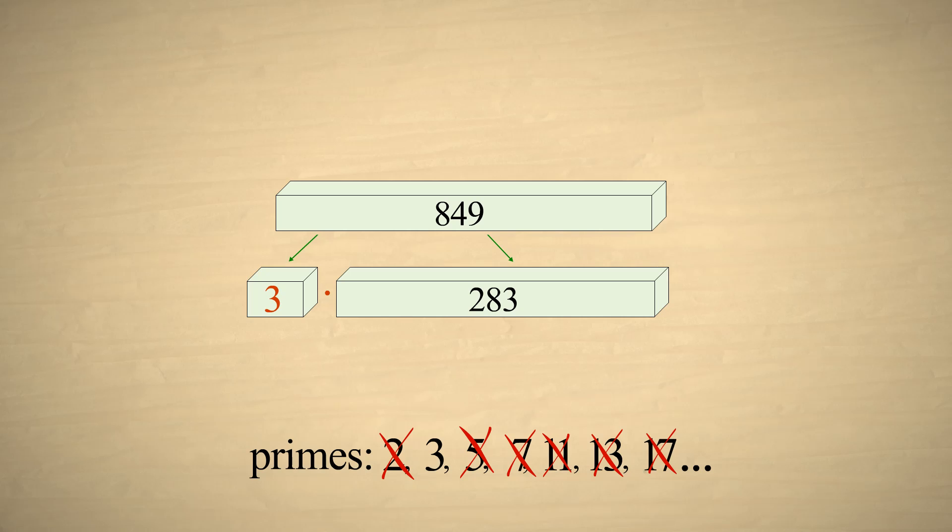Since we can find no factors of 283, it must be a prime number. So 3 and 283 are the only two factors of 849.